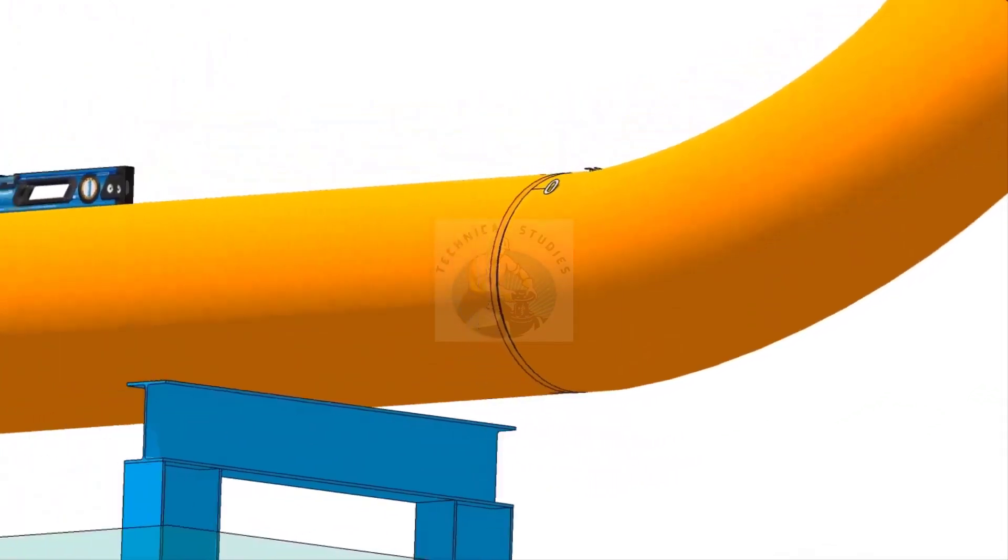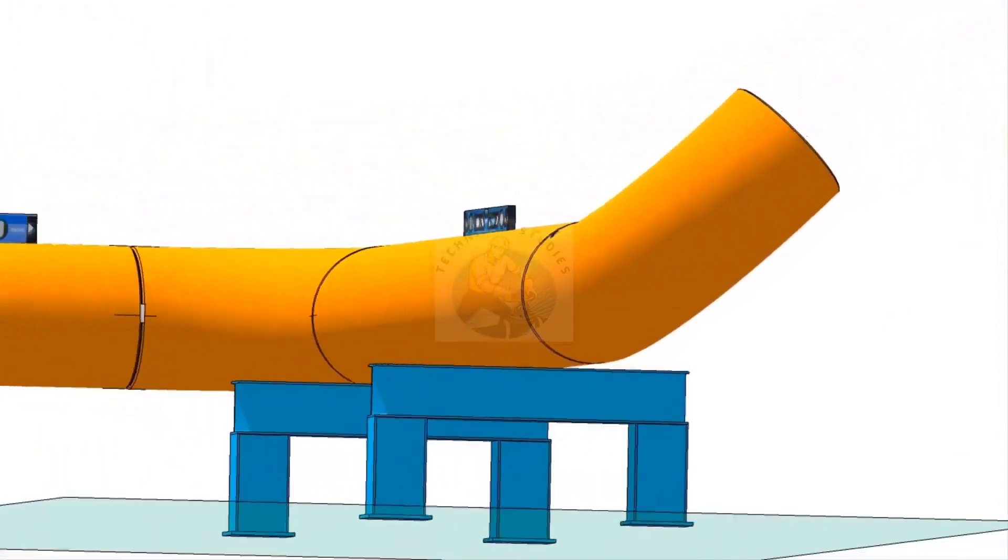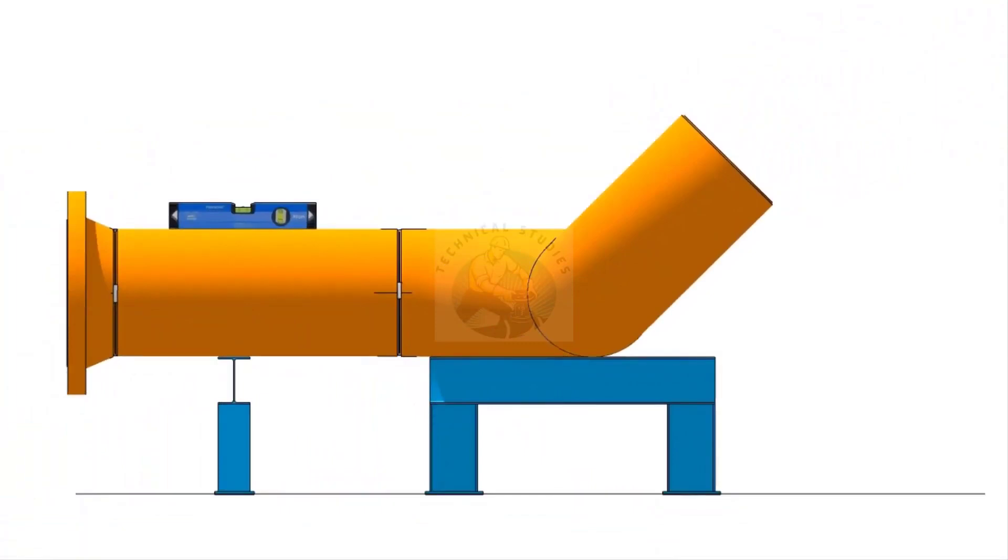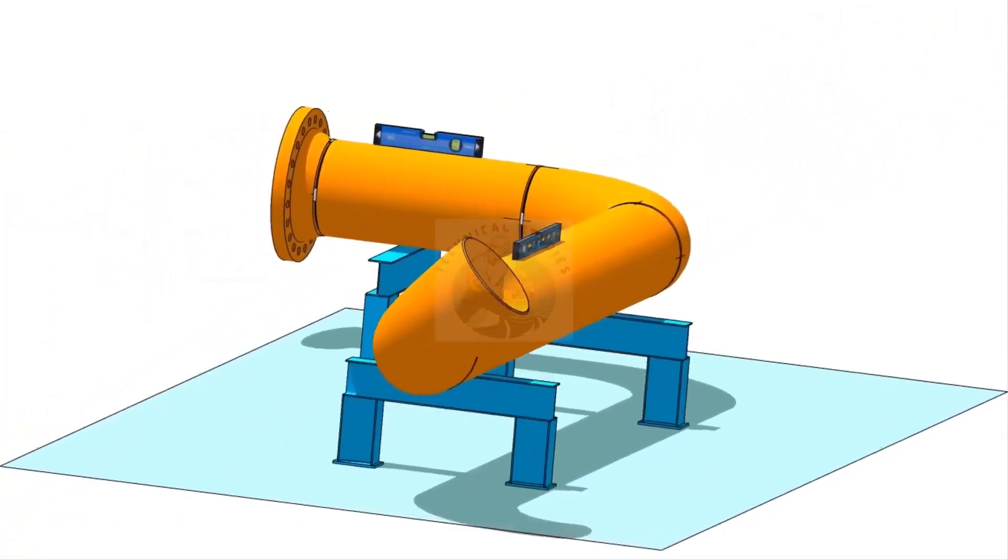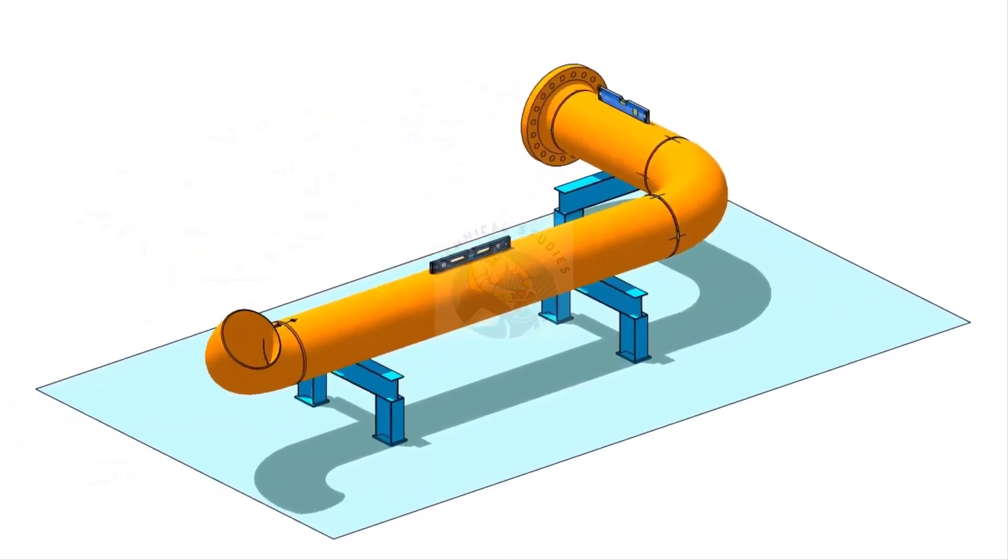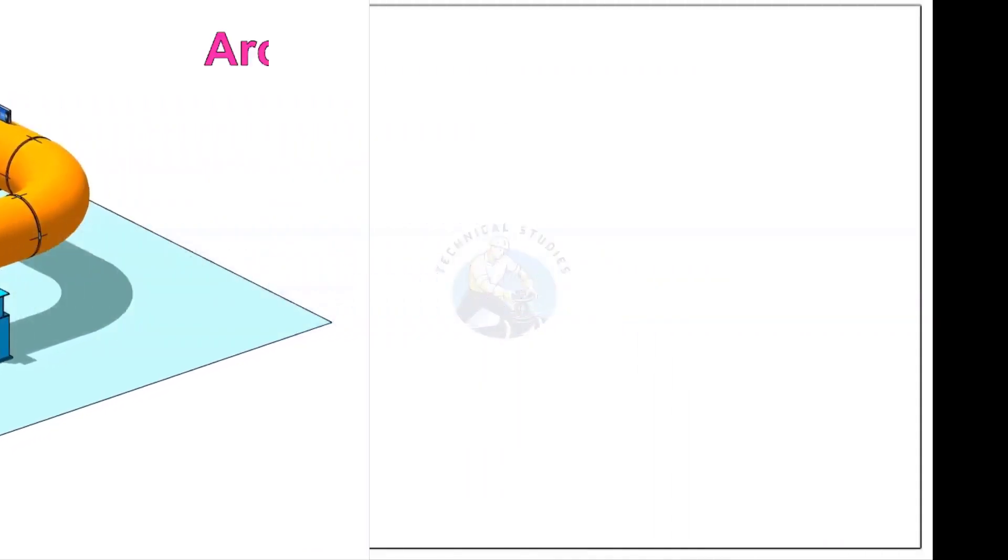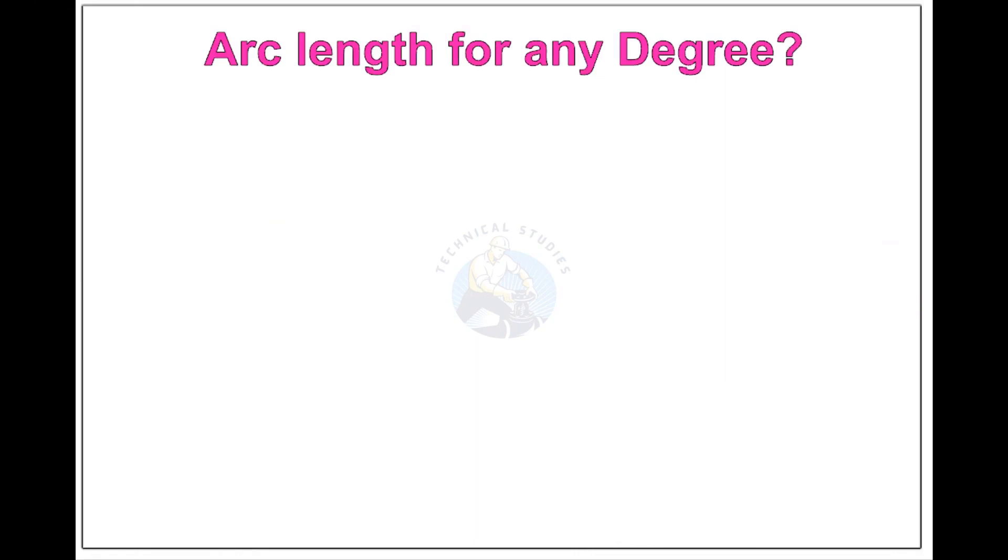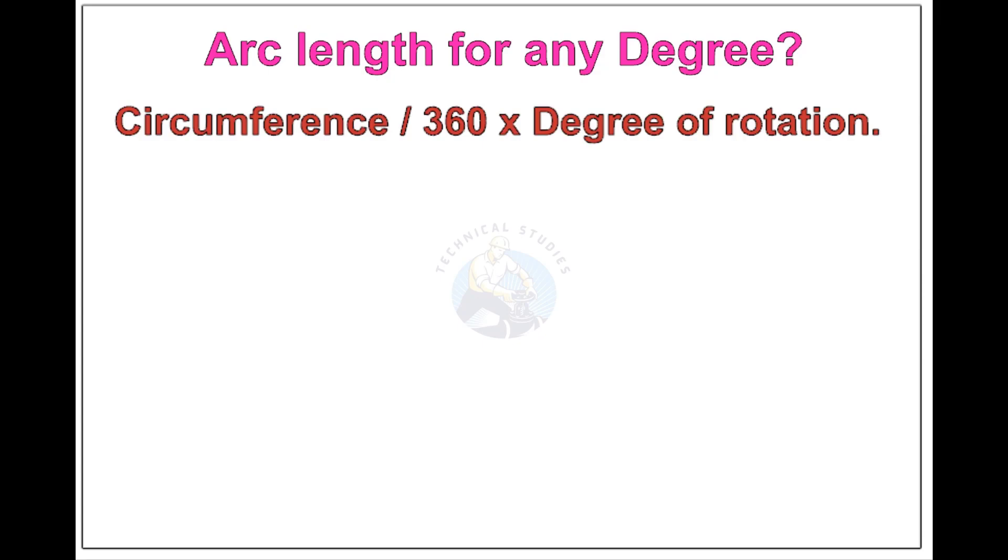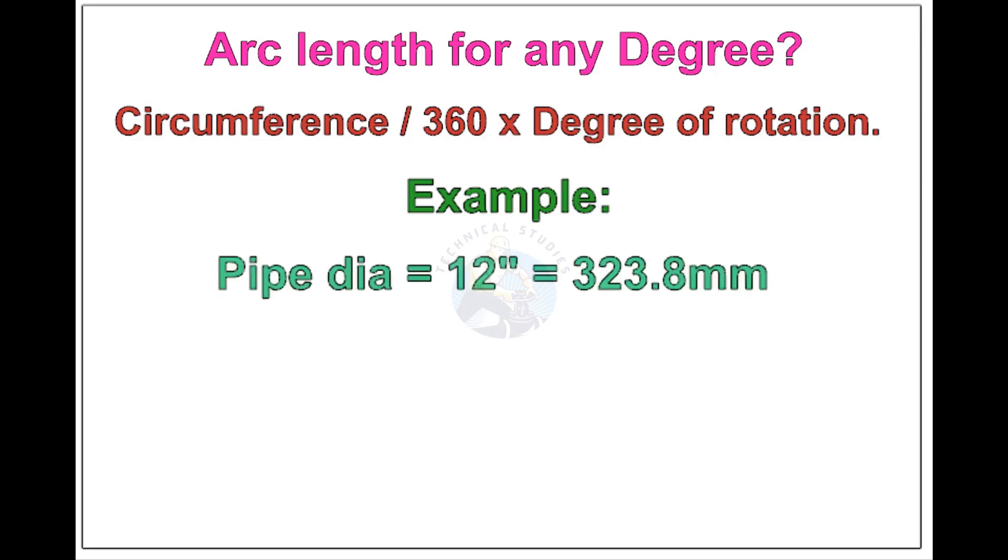I hope this video was helpful to you. Thank you for watching. Now, see the formula and calculations for finding the arc length of any degree rotation, with example. Arc length of any degree: Circumference of the pipe divided by 360 into the degree of rotation. Let us check the arc length of 12 inch pipe rotated 30 degree. Apply the formula. The answer is 84.8 millimeters.